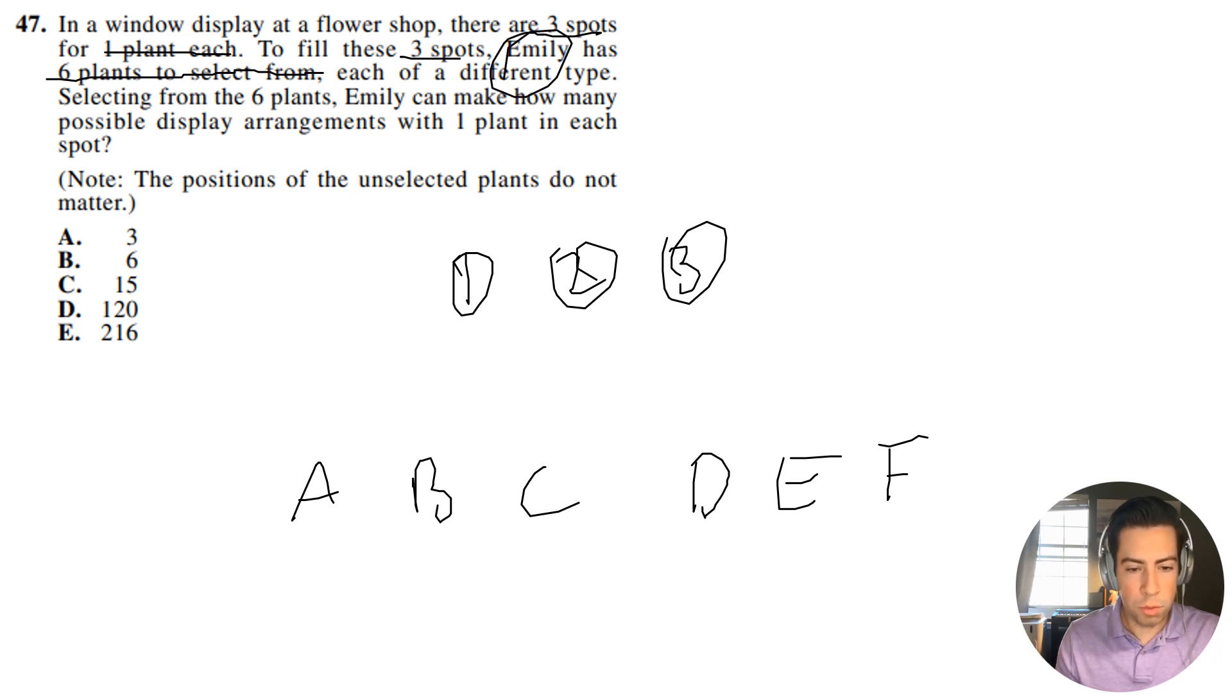So in spot number one, right, all three spots are empty. And one other thing to keep in mind is that each spot has to have a different letter, right, because one plant each. She only has one plant each.